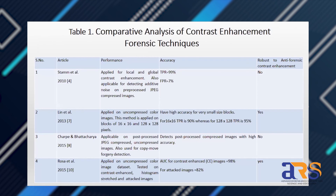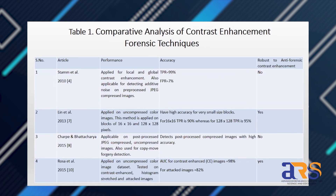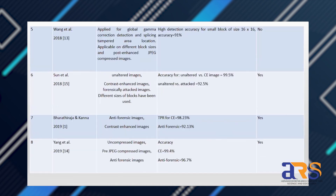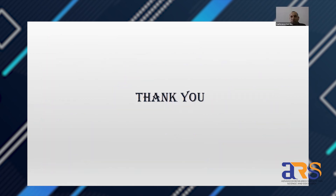The comparative analysis of contrast enhancement forensic techniques shows that in the present scenario, contrast enhancement is detected well, but anti-forensic accuracy is still only 70 to 80 percent. Therefore, future work will focus on developing an algorithm that can perfectly detect anti-forensic attacks as well as contrast enhancement. Thank you for your presentation — this was a review paper. Any questions?